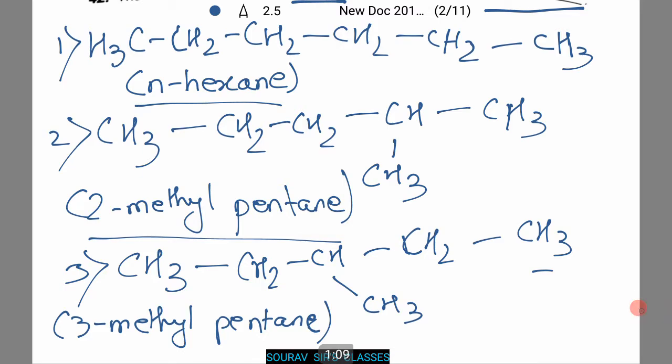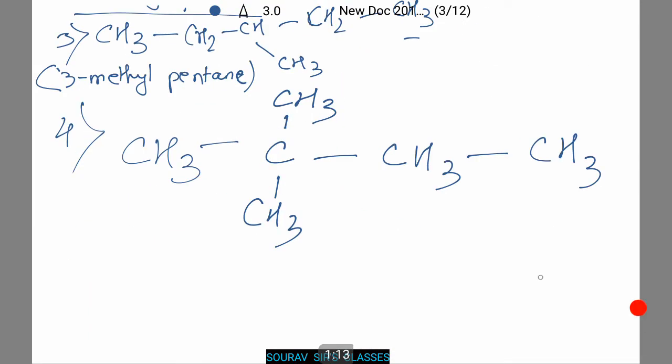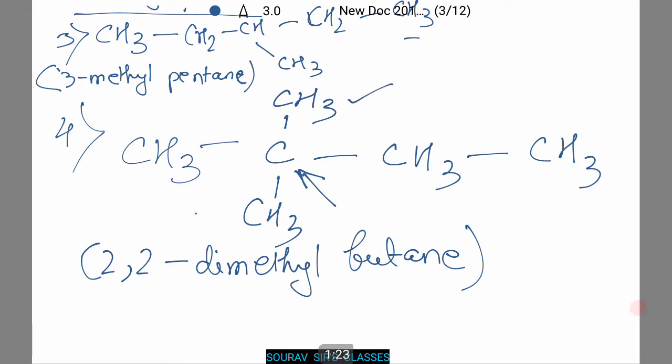Further we have other isomers. This compound is known as 2,2-dimethylbutane. Notice that this carbon out here forms an isomer by taking two methyl groups in its side chain.